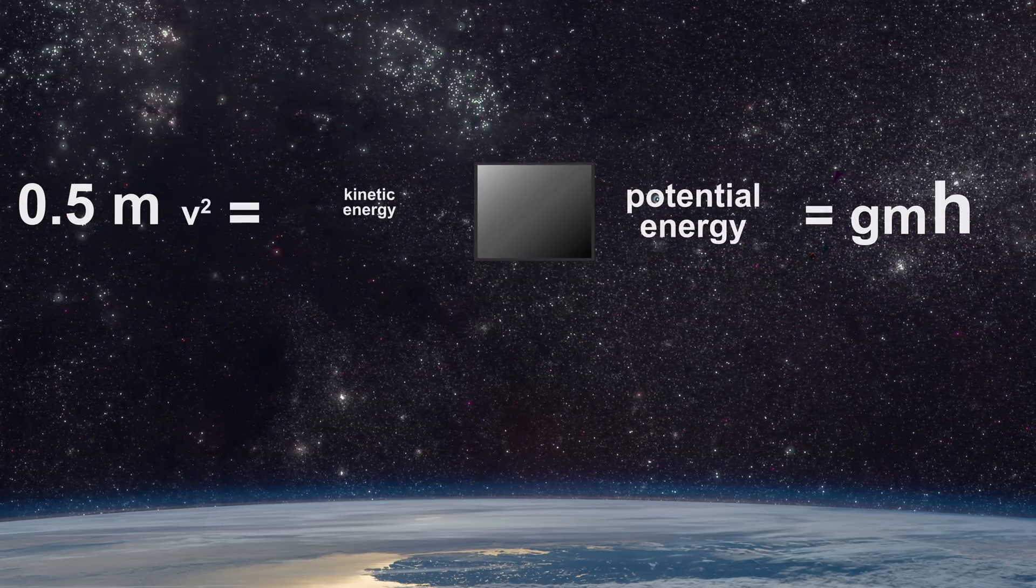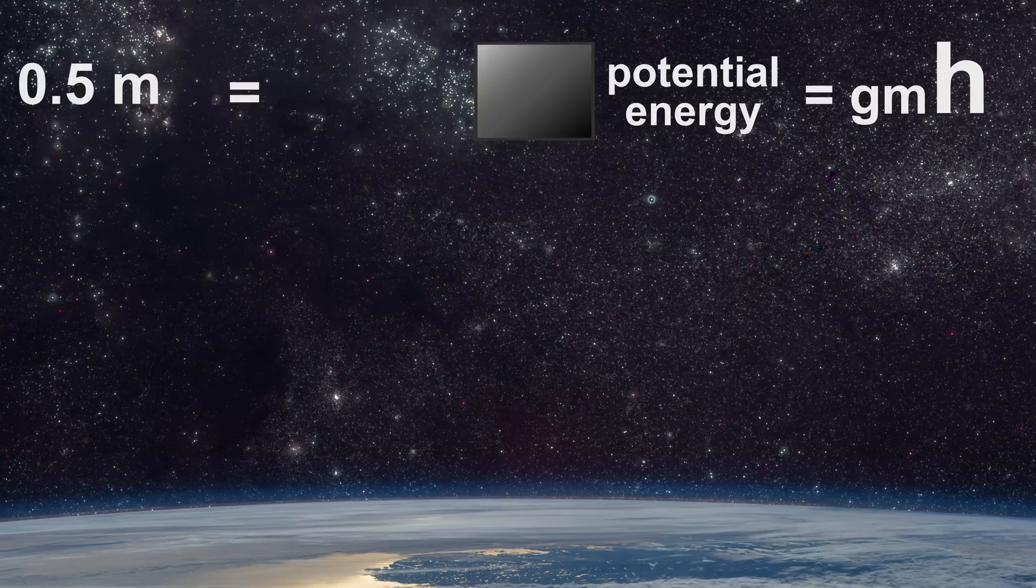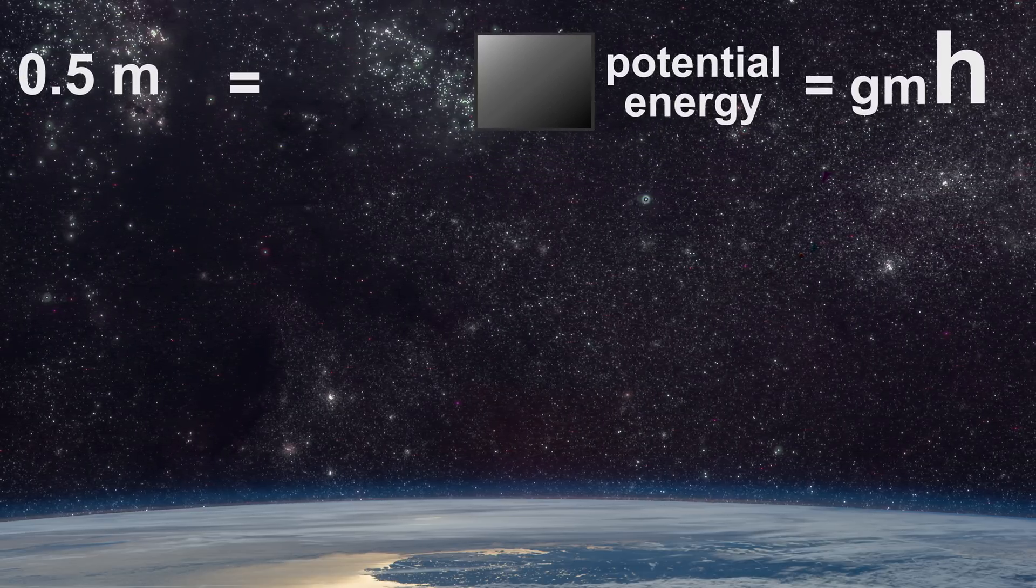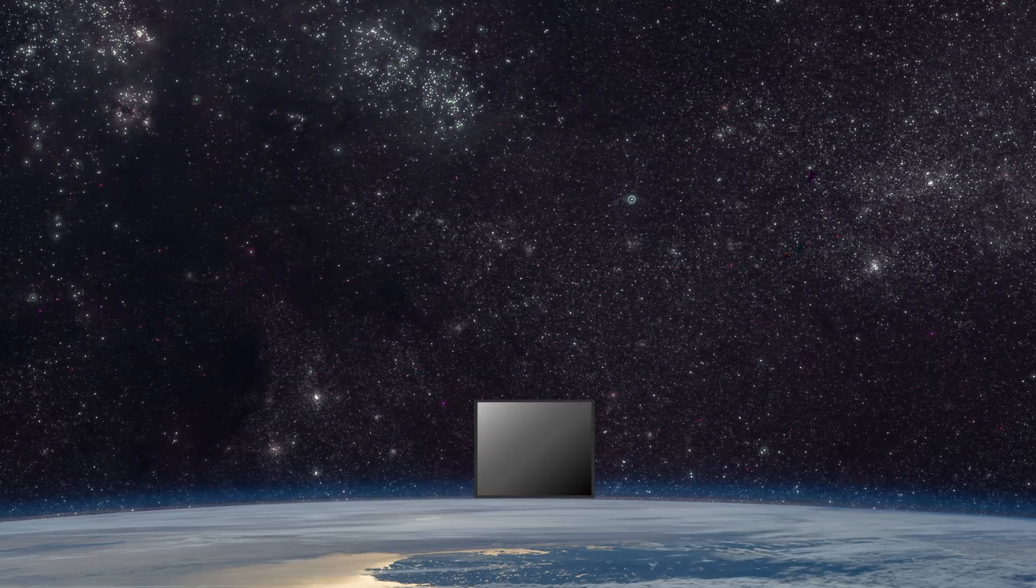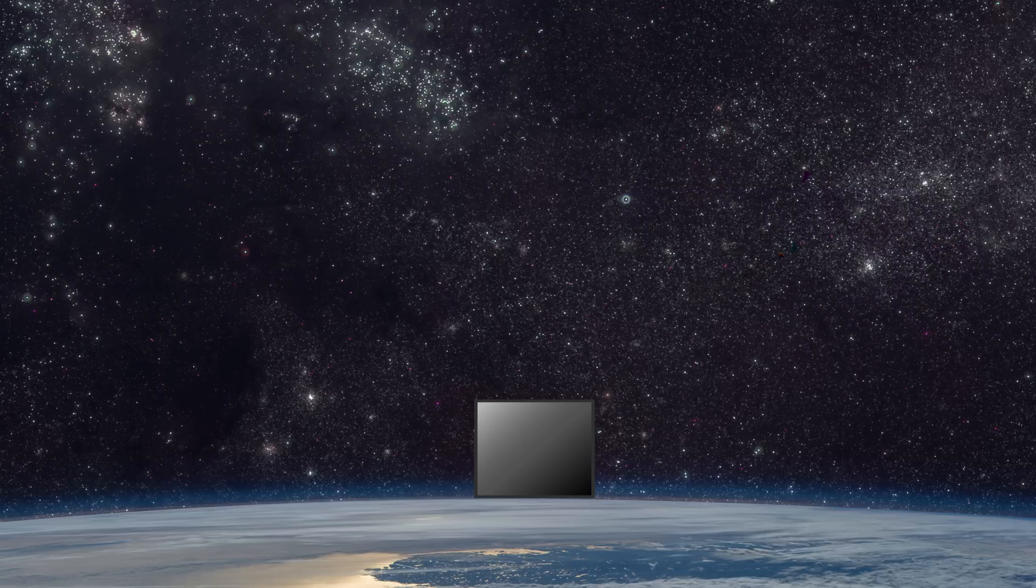If we threw the cube upwards, kinetic energy will be converted entirely to potential energy, then back to kinetic energy as it falls to the ground. We can see that potential energy and kinetic energy are interchangeable.